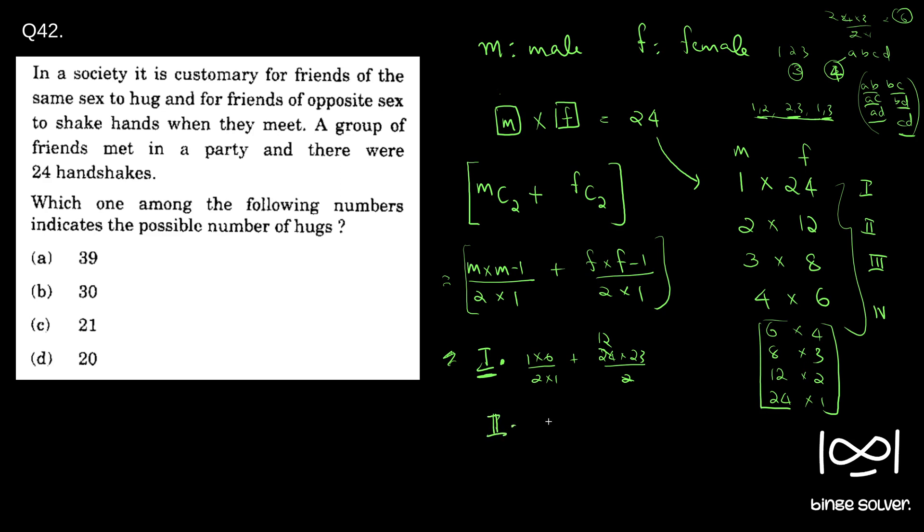So we will check 2. 2 is 2 into 12. So 2 into 1 by 2 plus 12, 12 into 11 by 2. So here 6, 66, 66 plus 1, 67, which is not in the options. So 2 is also not the answer.